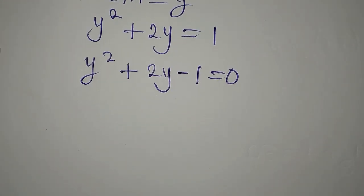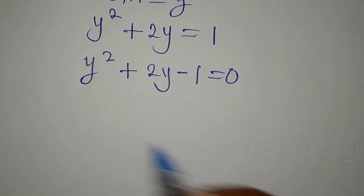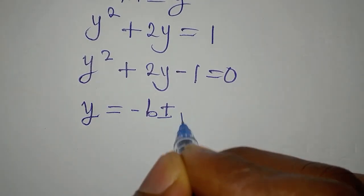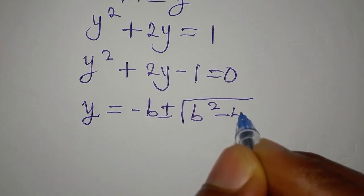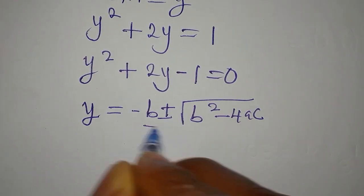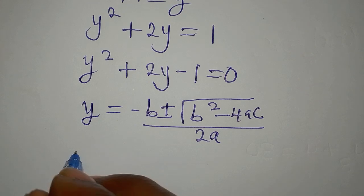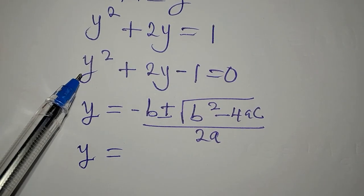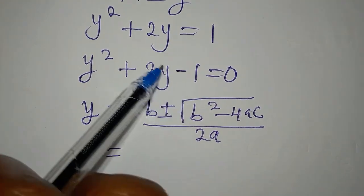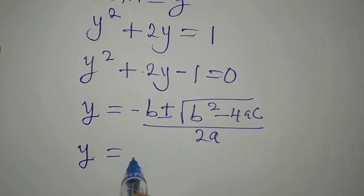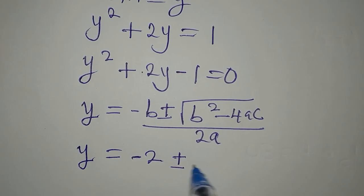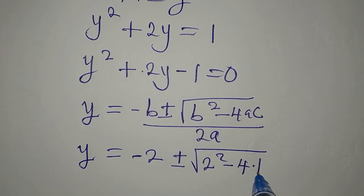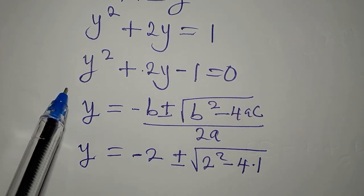Now I'm going to bring in the quadratic formula, which is y equals minus b plus or minus the square root of b squared minus 4ac all over 2a. So y equals, b is 2, that is the coefficient of y, so here we now put minus 2 plus or minus.